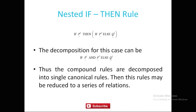For nested if-then rules, the rule 'if P1 then if P2 else Q1' can be decomposed as: if P1 AND P2 else Q1. Thus compound rules are decomposed into single canonical rules, which may then be reduced to a series of relations.